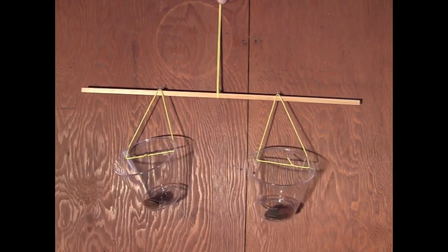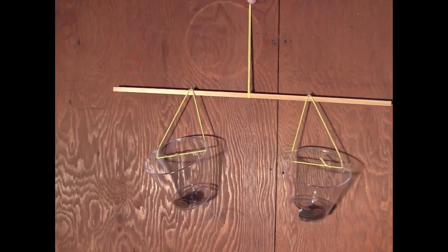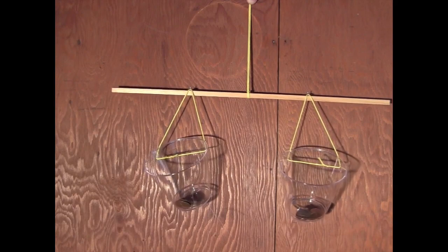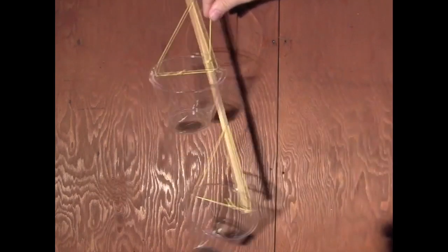Equilibrium is when the state of the system isn't changing. In this case, the 2D equilibrium case, the state of the system is the position of these objects, which still isn't changing unless I throw a coin in to knock it out of equilibrium.